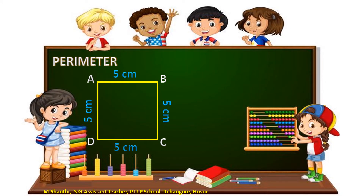How to find the perimeter of a square? Since all sides of a square are equal, we only need one side to find its perimeter. For example,